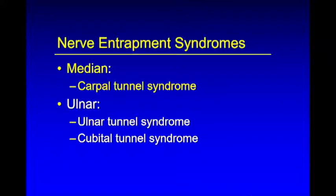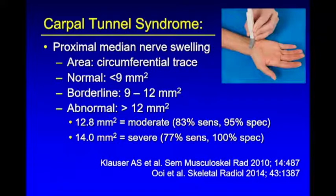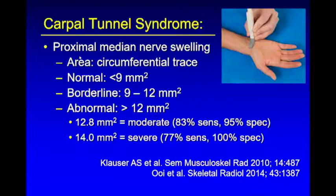I'll go through each nerve highlighting the critical anatomic locations where we can see entrapment, beginning with the median nerve and carpal tunnel syndrome. We're looking for enlargement of the nerve at the wrist crease, which is at and proximal to the entrapment site. The area of the nerve correlates with the severity of carpal tunnel syndrome. The thresholds allow you to dial your sensitivity and specificity — these are the numbers quoted in the literature.